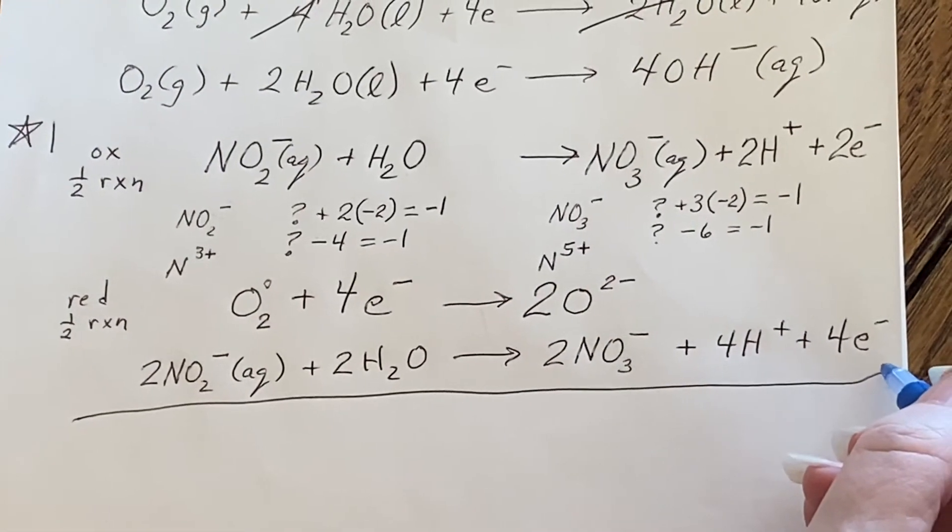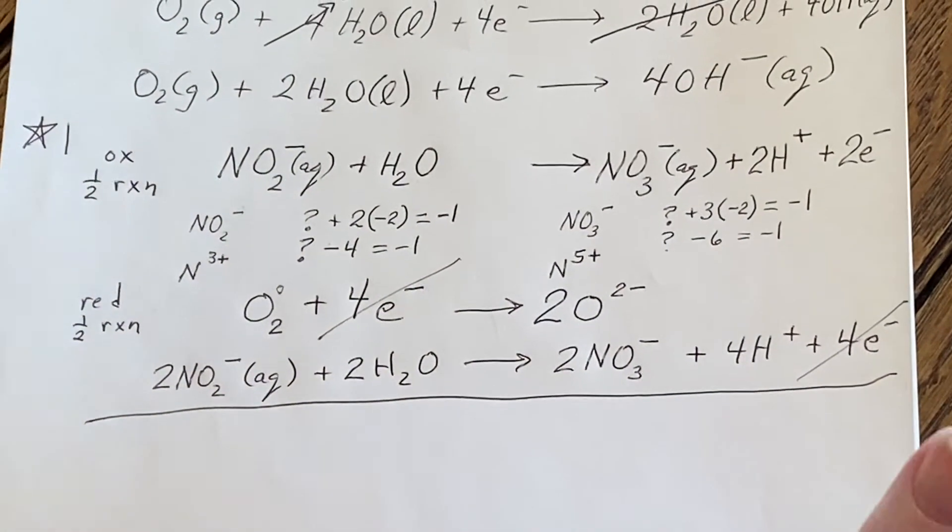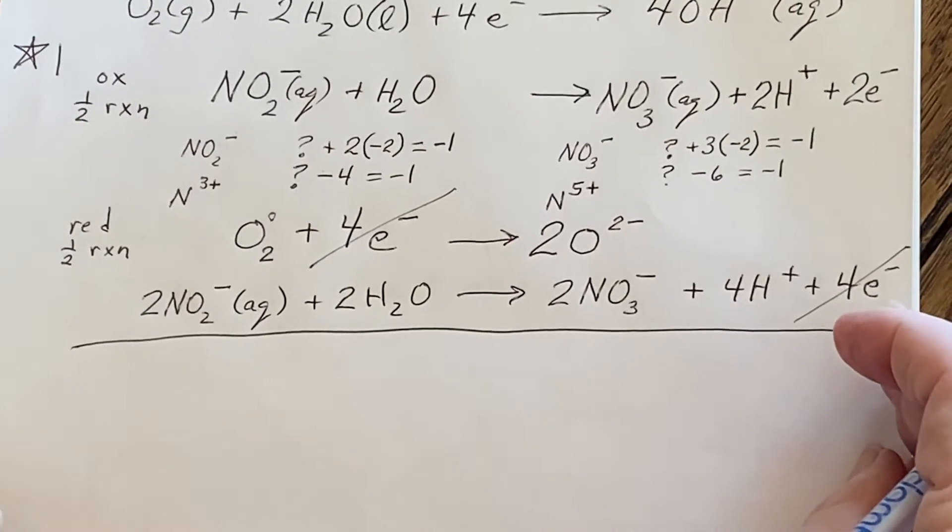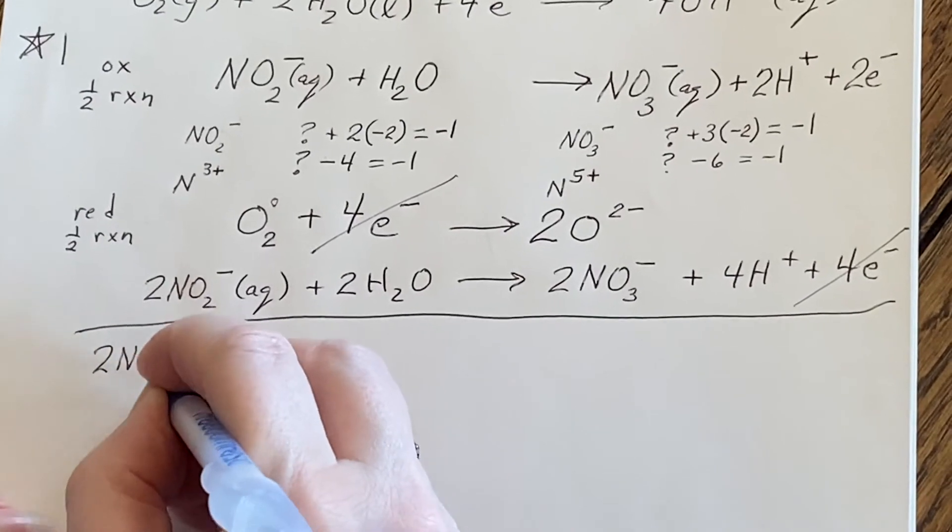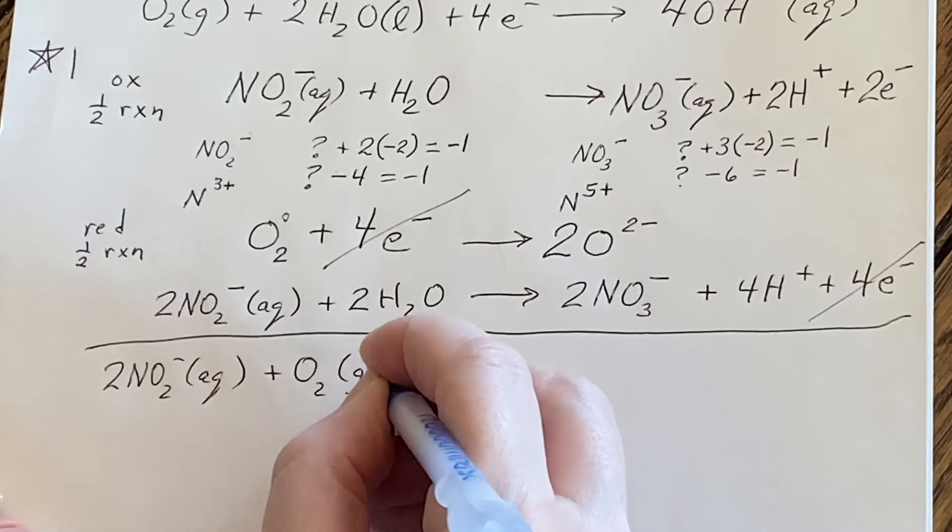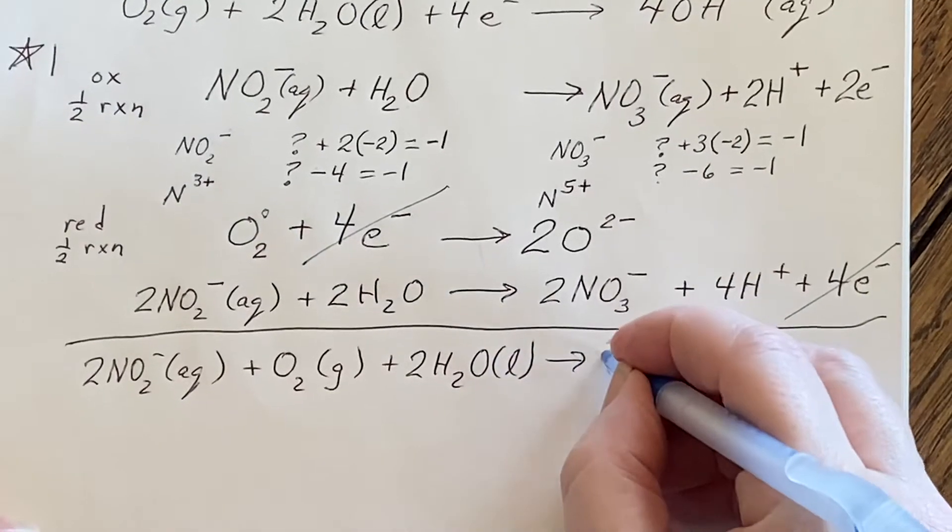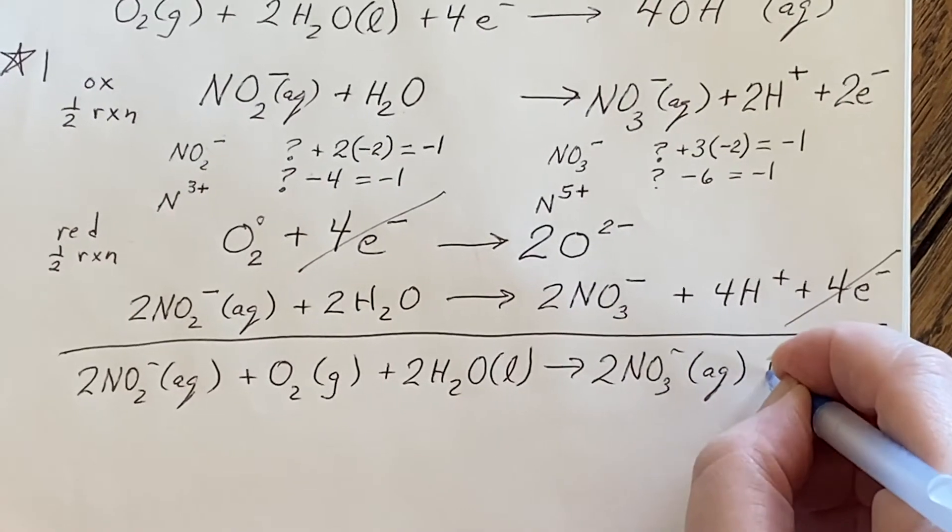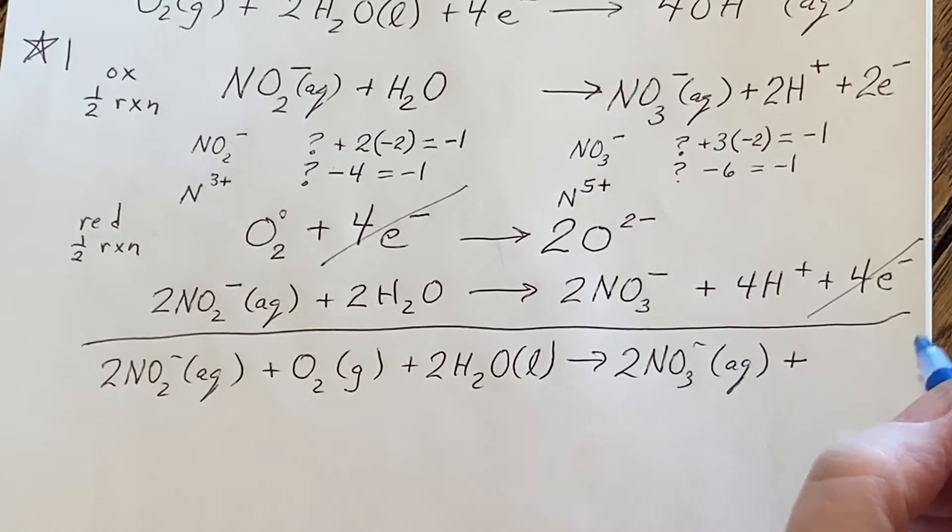I will add these together. When I add them together, I can see that the first thing that's going to happen is the electrons are going to cancel. Good. That was what I was setting it up to do, right? I wanted that to happen. So I write this down then, the nitrite ion and oxygen as a gas and water as a liquid will become nitrate ion in solution. And, oh,